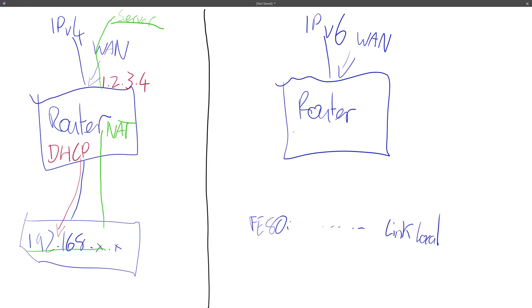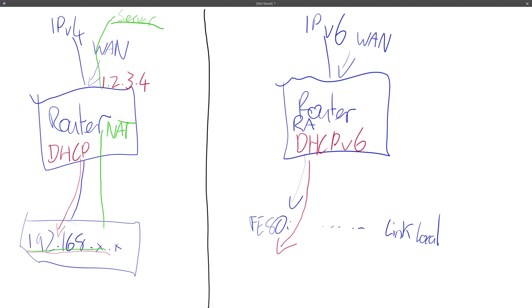Your other address can come from router advertisements. The router sends an advertisement to the host that says it's a router and gives the host a prefix so it can make its own address. But that address might be long and obscure, which is what a lot of people in the comments were talking about. But that doesn't bother me because this so-called nice easy IPv4 address came from a DHCP server — and there's nothing to stop us having a DHCPv6 server that sets up IP addresses on your hosts from a configured scope and range.